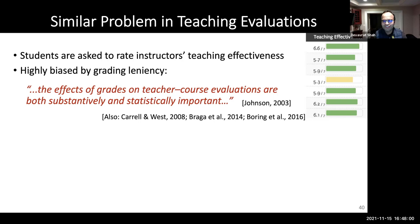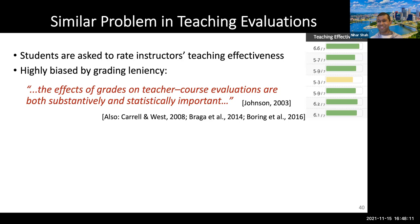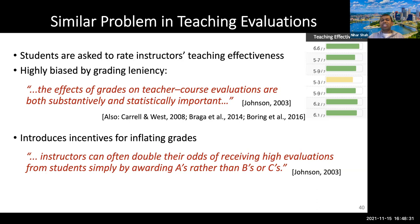Our goal is to de-bias this author-provided feedback. There is a similar problem in teaching evaluations — students are asked to rate instructors at the end of courses, and these ratings are highly biased by grading leniency. Studies show that if a teacher gives more A's they get more positive evaluations, which also introduces incentives for teachers to inflate grades.